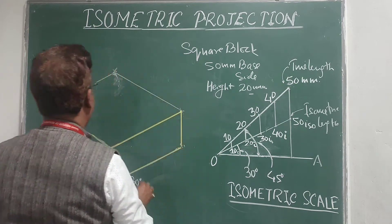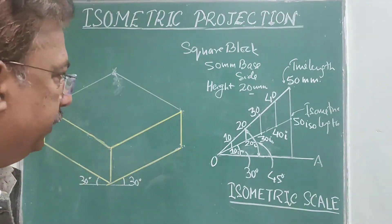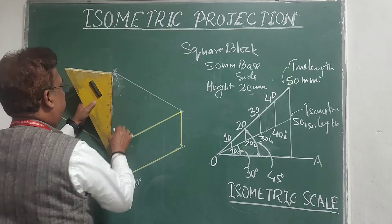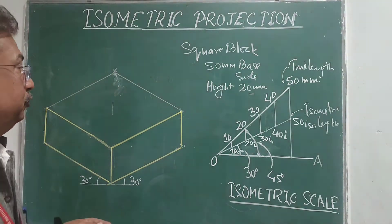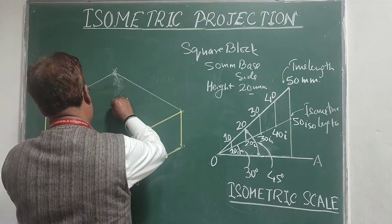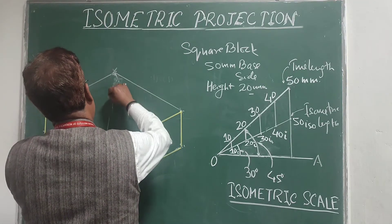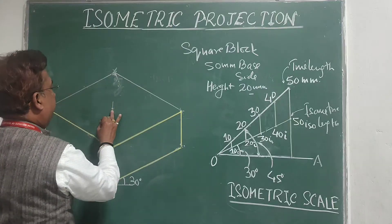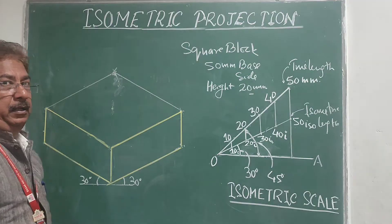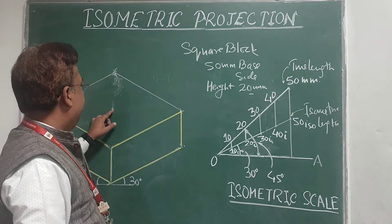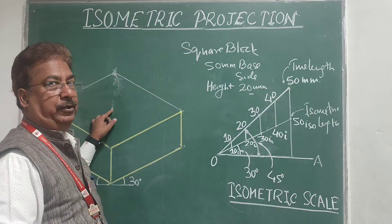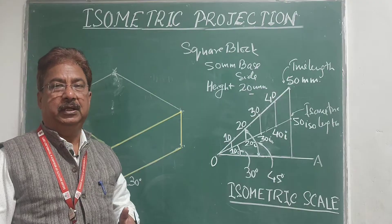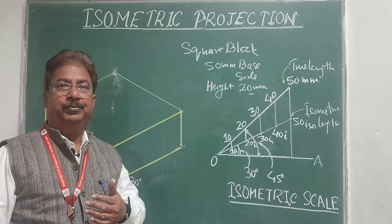Above the square block I am going to place a sphere. Remember that the isometric projection of a sphere will be a circle of true size, not the reduced isometric length. First, I mark the center of the top face of the block. Note that the sphere touches the top corner in orthographic projection, but in isometric projection it appears to come a little lower.